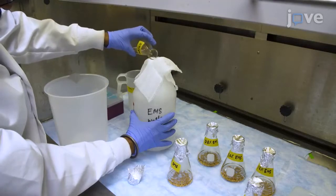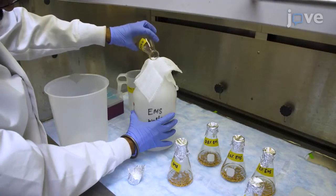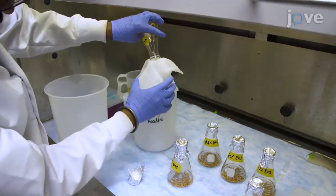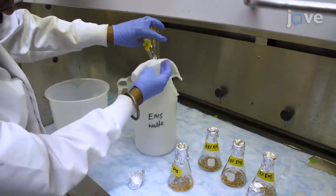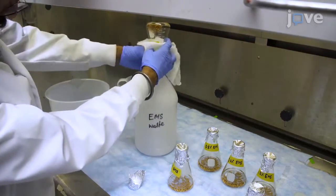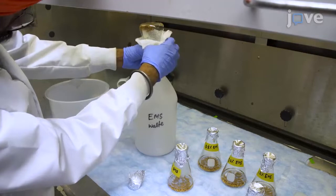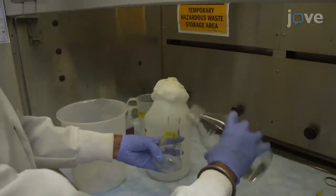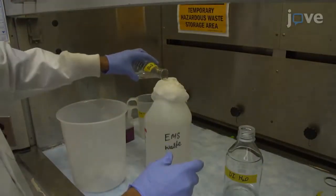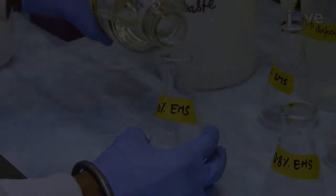Now, decant the EMS solution into an empty waste bottle and pour the treated seeds onto cheesecloth placed on an empty waste bottle to collect separately for each treatment. Use extra water to help pouring of the seeds.